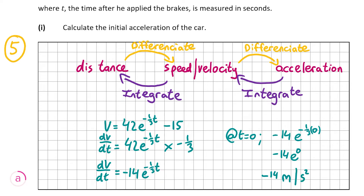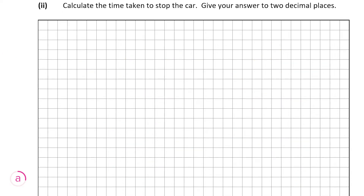Don't forget the units for full marks. Now we're going to look at A, Part 2, which is worth 10 marks. Here we have to calculate the time taken to stop the car, giving our answer correct to two decimal places. The car will be stopped when v = 0, so we have to find t when v = 0.